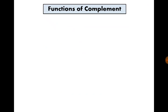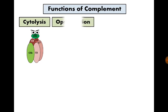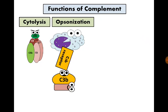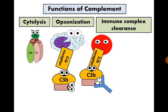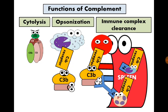What are the functions of the complement system? First, cytolysis of organisms through the membrane attack complex. Second, opsonization, as there are receptors for C3B on the surfaces of phagocytic cells. Third, immune complex clearance: C3B attached to an antigen-antibody complex goes and attaches to a red blood cell through C3B receptors on the RBC surface. This complex then goes to the spleen, where phagocytes are abundant, clearing the complex from circulation.